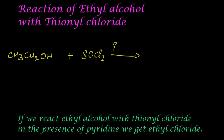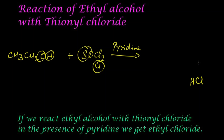In presence of pyridine as a catalyst, the hydrogen from the OH group and one chlorine from SOCl₂ will leave as HCl, and the oxygen with SO will leave as SO₂. The remaining chlorine will attach to the ethyl group, giving CH₃CH₂Cl — ethyl chloride or chloroethane.